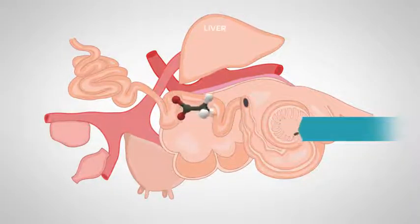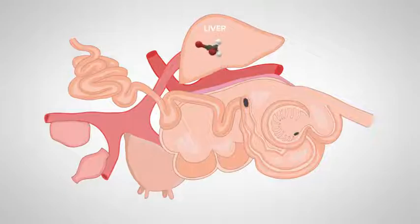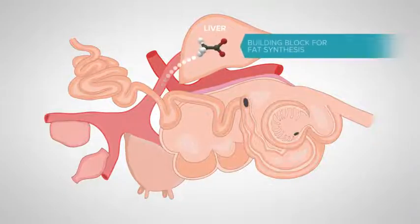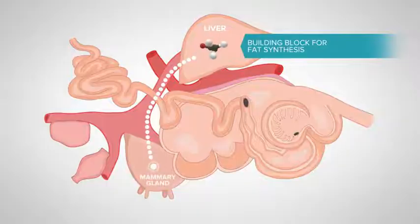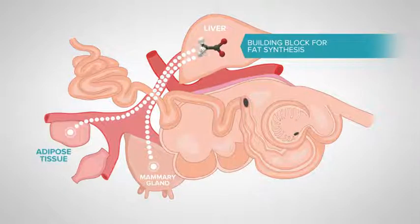Acetate is absorbed through the rumen wall. It passes into the liver and acts as a building block for fat synthesis to produce either milk fat in the mammary gland of a lactating cow or body fat in the adipose tissue of a cow that is gaining condition.